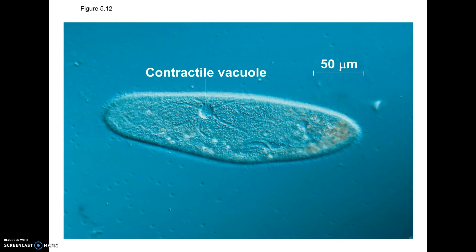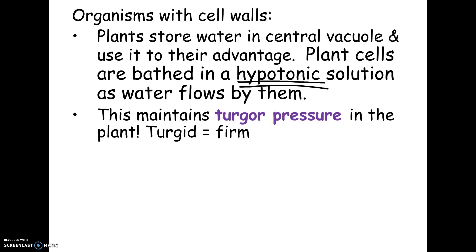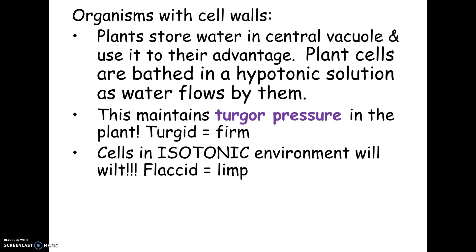Plants are different. Plants actually don't want to be in an isotonic environment — this is something you should memorize. Plants actually need to be in a hypotonic solution, so fresh water is constantly coming in at the roots and bathing the cells. Why don't the plant cells swell up and burst? Because they have a cell wall and a vacuole. A plant in a hypotonic solution is actually a healthy plant. The vacuole swells up, creates pressure on the cell wall, and you have a healthy plant.